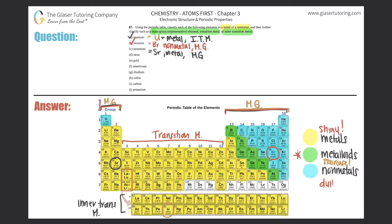Element d: Neon. Neon's symbol is Ne, and it's element number 10. Neon is specifically a non-metal, and it's in group 18 — one of the big skyscraper groups — so it's a main group element.